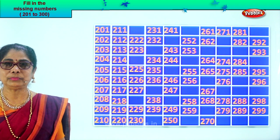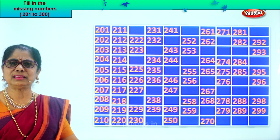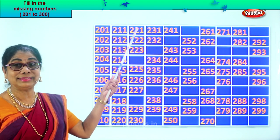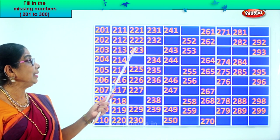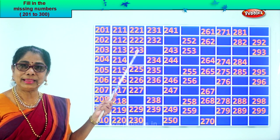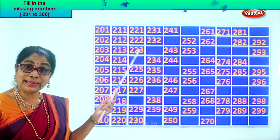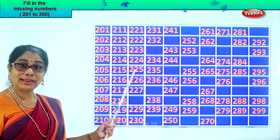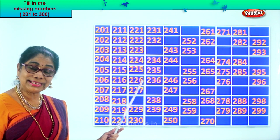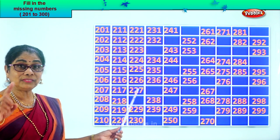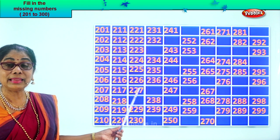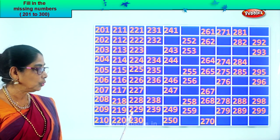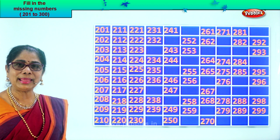Now after two hundred and twenty — after twenty, what's the number? Twenty-one. So we write two hundred and twenty-one. Two hundred and twenty-two. Two hundred and twenty-three. After twenty-three — twenty-four. Two hundred and twenty-four. Two hundred and twenty-five. Two hundred and twenty-six. Two hundred and twenty-seven. After twenty-seven — twenty-eight. Two hundred and twenty-eight. Two hundred and twenty-nine. Two hundred and thirty.